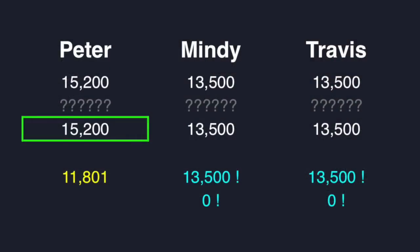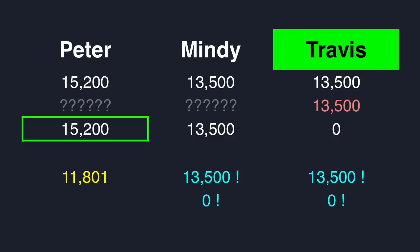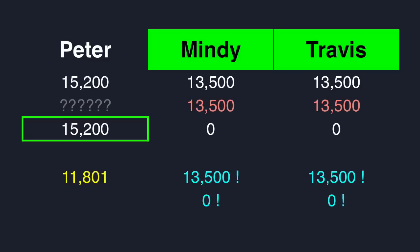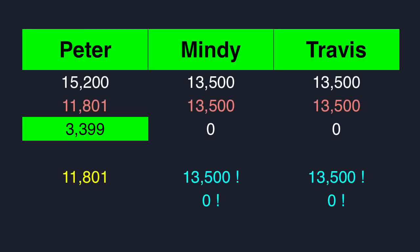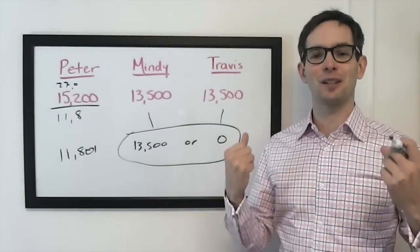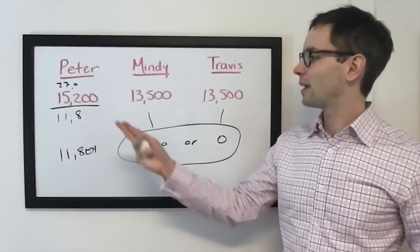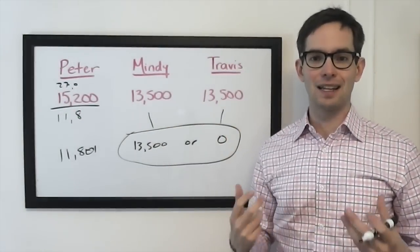Travis missed and wagered everything. Mindy also missed and also wagered everything. That left the door wide open for Peter, who completed the unholy trifecta and wagered 11,801. That is some solid wagering after a very, very tight game.